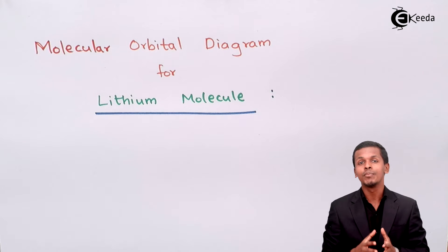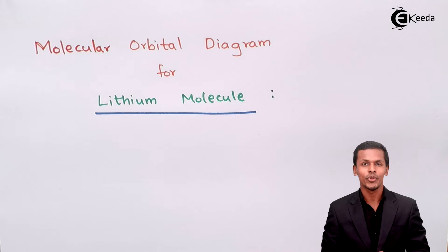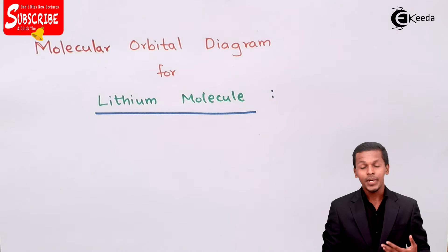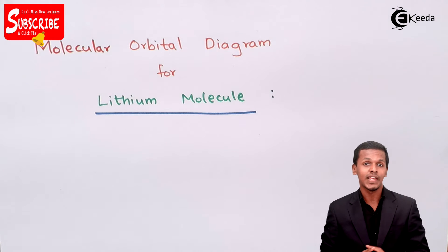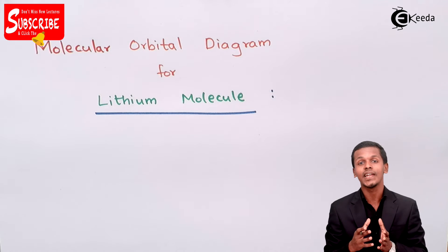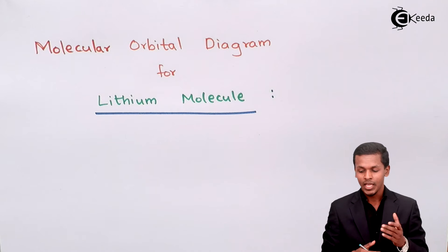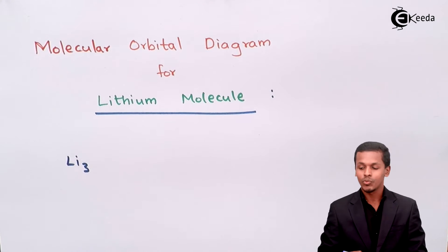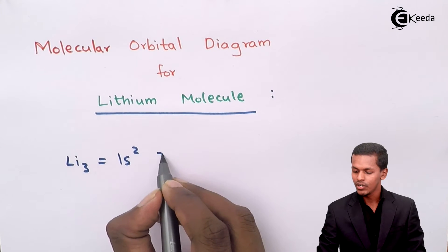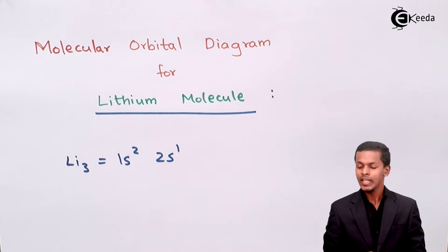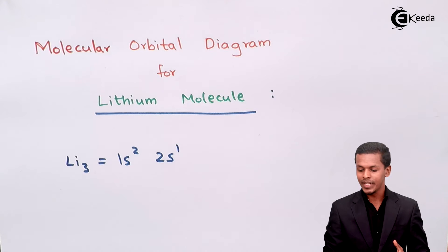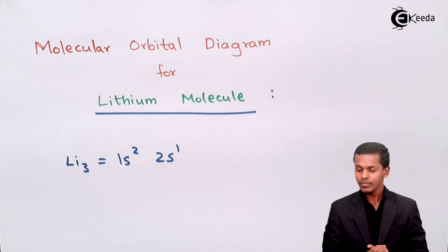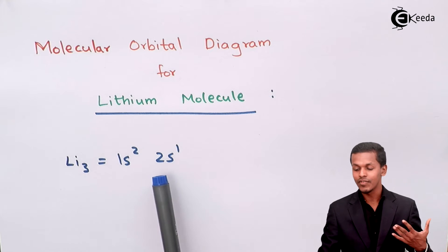Now we are going to discuss how we can draw the molecular orbital diagram for the lithium molecule. Before talking about the molecular orbital diagram, it is essential to understand how we write the electronic configuration for lithium. Lithium has an atomic number of 3, so its electronic configuration is 1s² 2s¹. This means it has two orbitals: the 1s orbital and the 2s orbital.